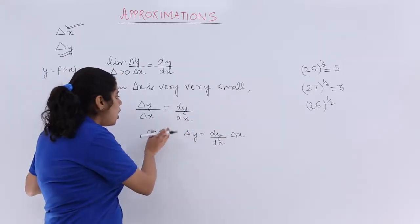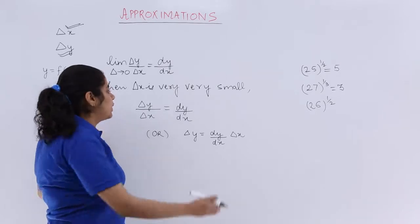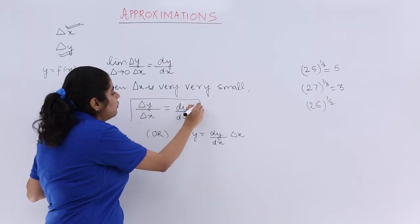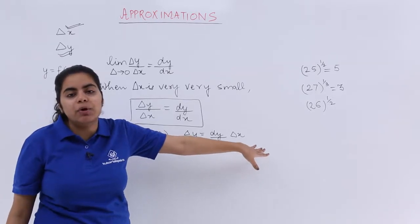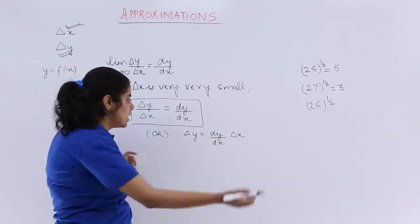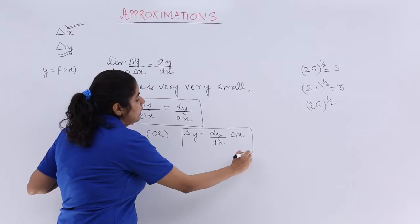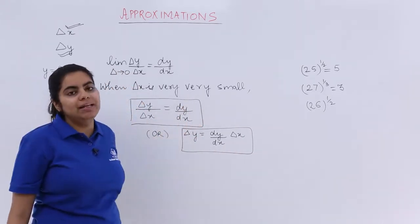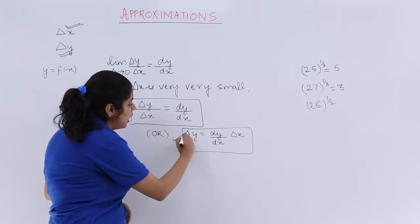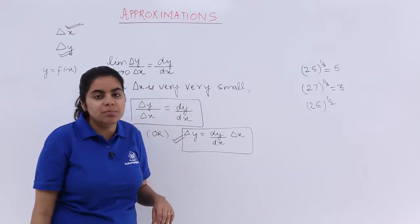Now the other form would be what? You can directly from here find out the value of del y, which will be very much needed in the numerical problems of approximations. That is nothing but del y equals dy upon dx multiplied by del x. So we will be using this formula a lot in approximation problems.